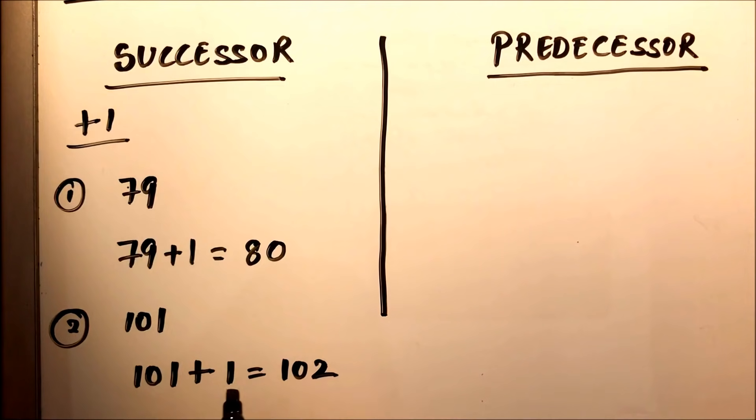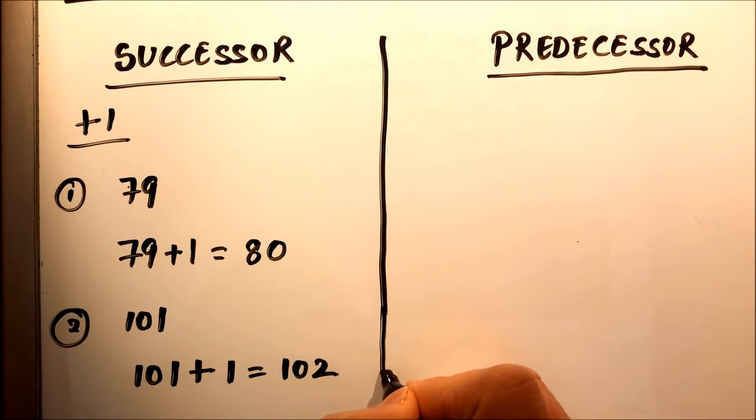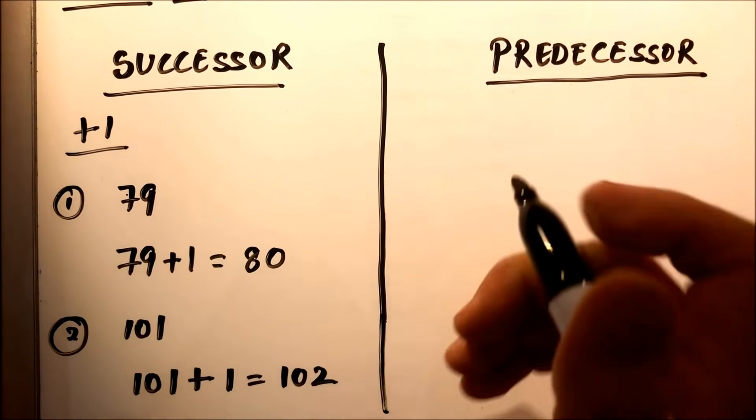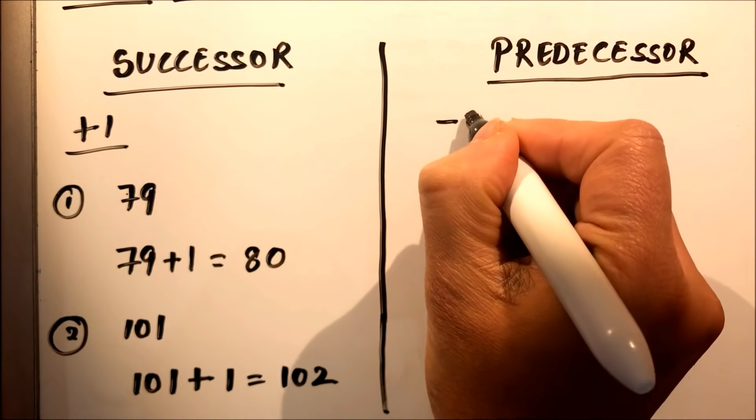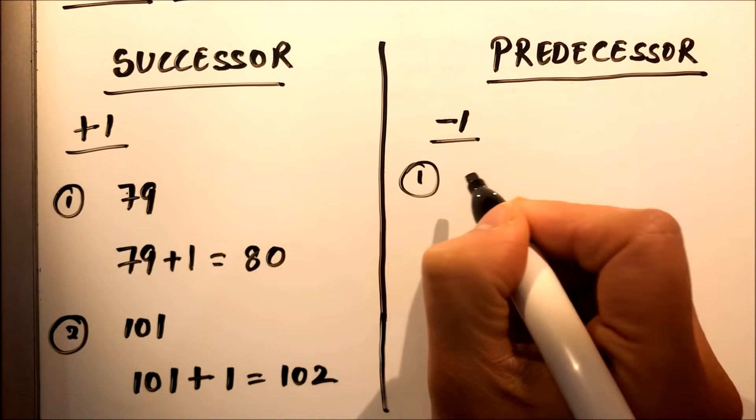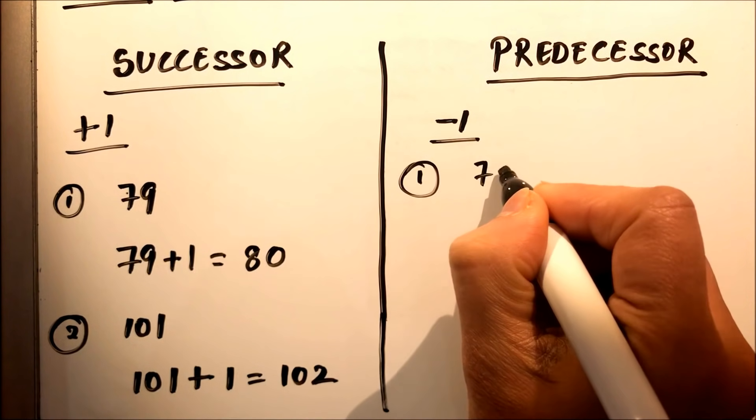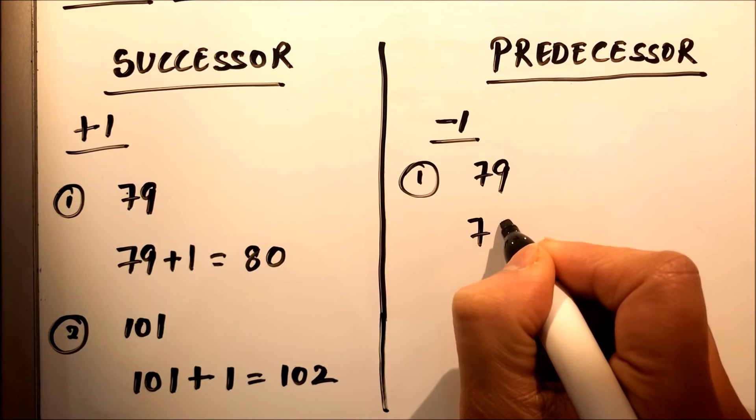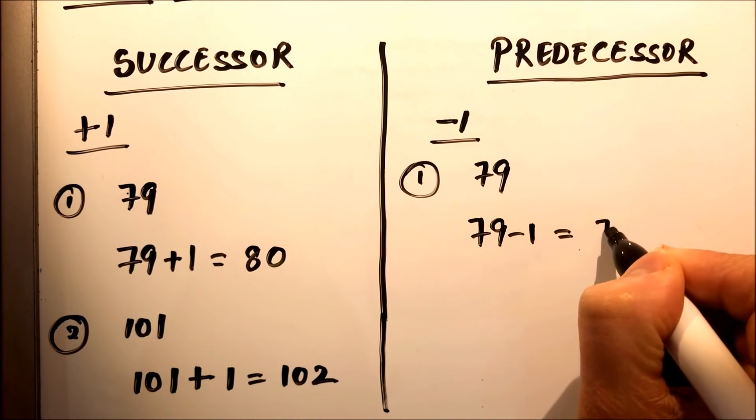Now we'll find the predecessor. Predecessor is always one less than the number. So if you are asked to find the predecessor of 79, it will be 79 minus 1, which is 78.